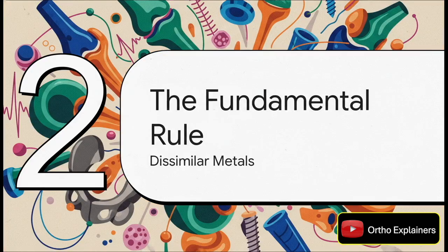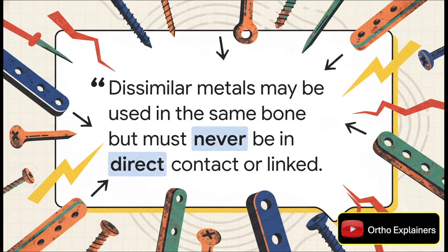To navigate this, it all boils down to a single non-negotiable principle for using dissimilar metals in our constructs. If you take away only one thing from this entire discussion, make it this: dissimilar metals may be used in the same bone, but they must never be in direct contact or mechanically linked.